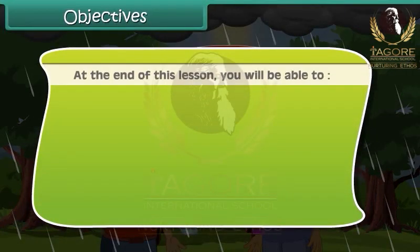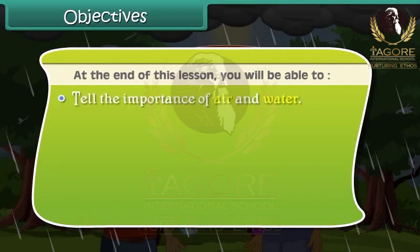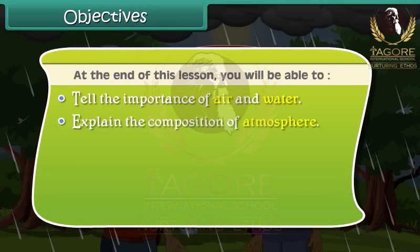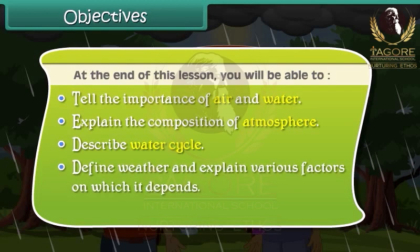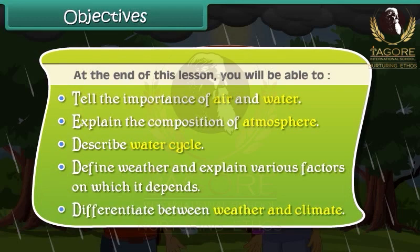At the end of this lesson you will be able to: tell the importance of air and water, explain the composition of atmosphere, describe the water cycle, define weather and explain various factors on which it depends, and differentiate between weather and climate.